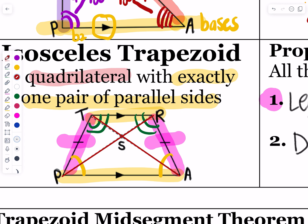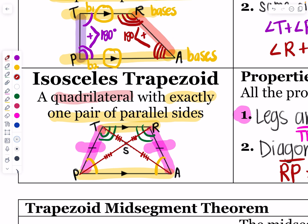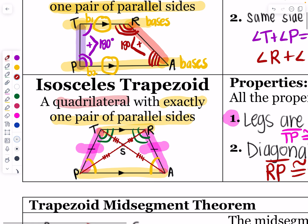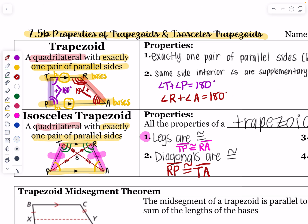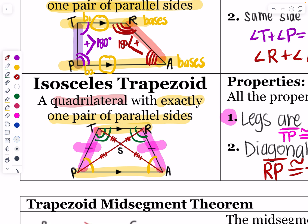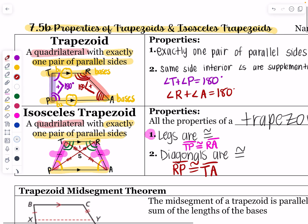The diagonals do not cut each other in half, but they do create isosceles triangles within this shape — at the top and at the bottom of the trapezoid. The smaller diagonal segments are congruent to each other, and the larger diagonal segments are congruent to each other.